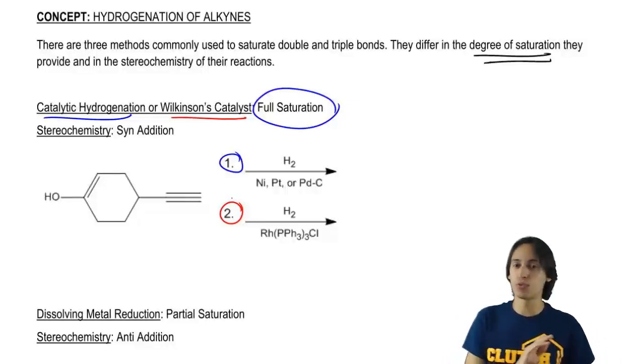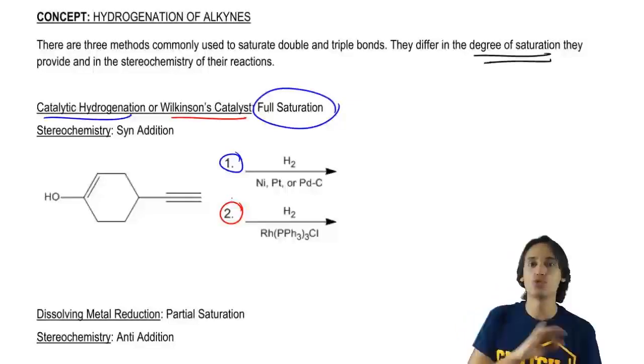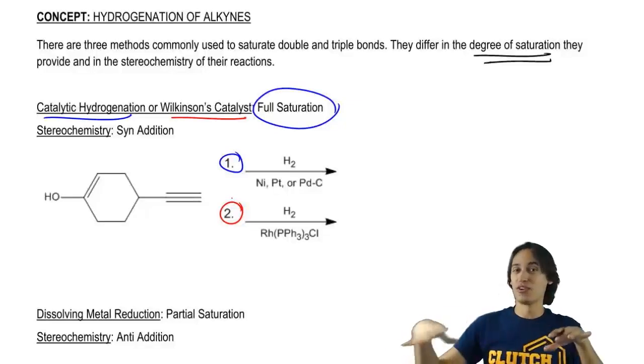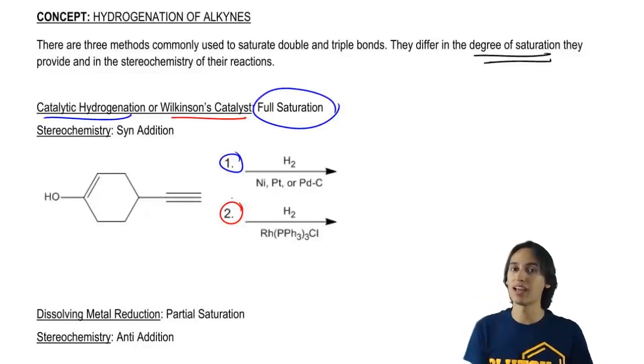As you can see, the reagents for Wilkinson's catalyst are a little bit confusing. It's got the H2 because we're adding hydrogen, of course, but the catalyst is way different. In this case, we're going to use rhodium with these three triphenyl phosphines and then a chlorine. It looks messy. I'm not going to draw the whole thing for you. As long as you can recognize that that's Wilkinson's, that's fine.